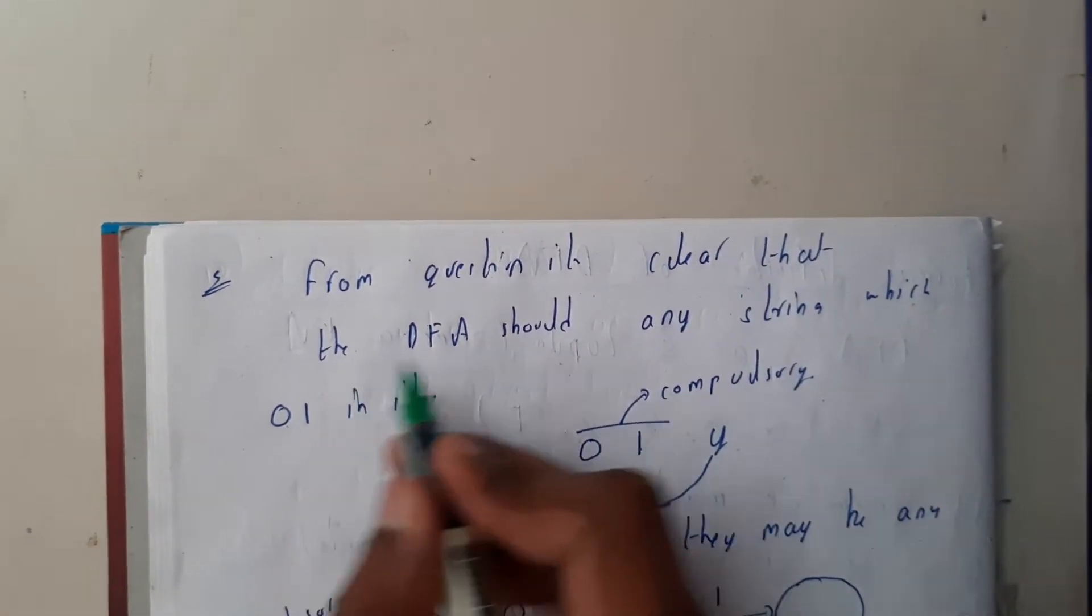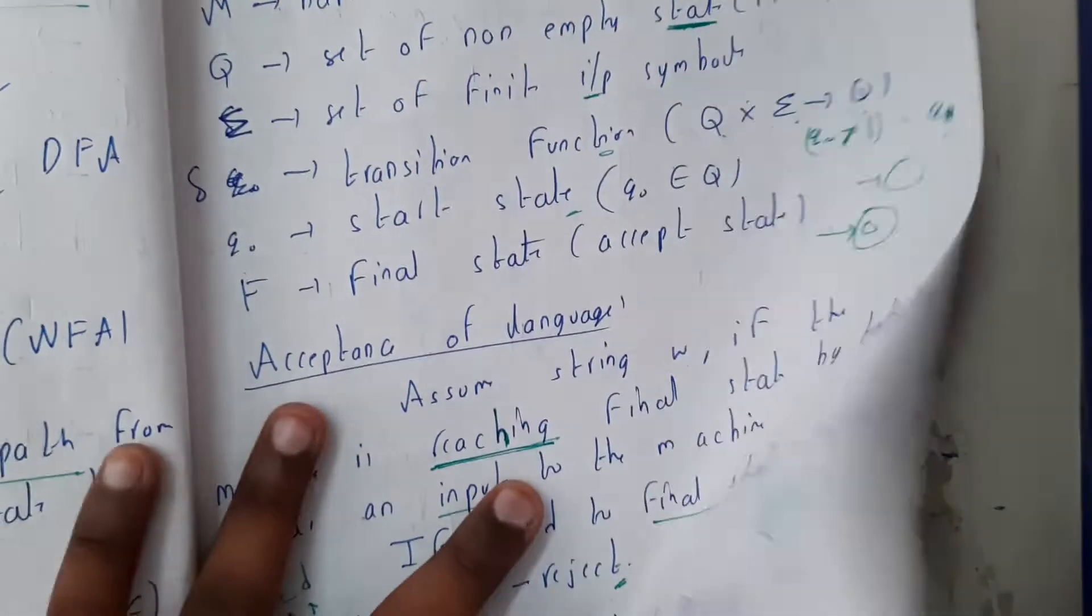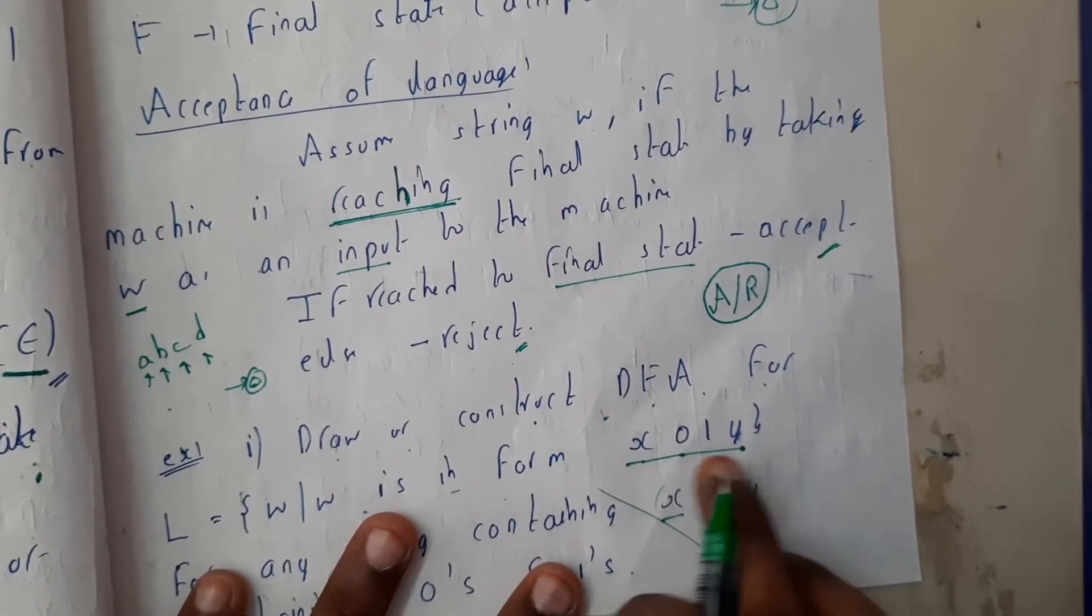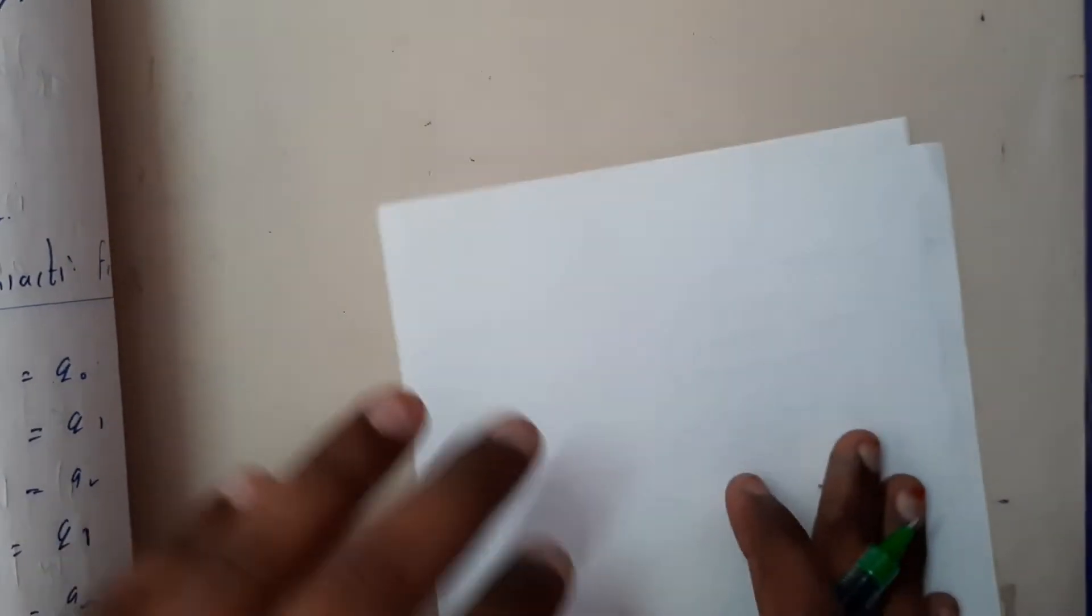It is clear that the DFA should contain zero one string. Initially before zero and one you can have anything, that is x, and after zero one you can have anything, y. Indirectly they are saying you should have zero one in the center.